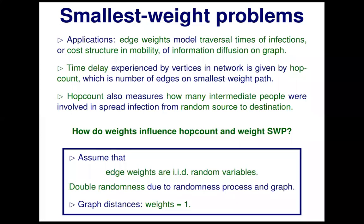Throughout this talk we'll assume that these edge weights are IID random variables, which means there is actually double randomness in this problem. We have randomness in the edge weights on one hand, and on the other hand we'll be modeling our networks through random graphs, so the graph itself is also random. We want to know what the interplay is between these two sources of randomness. Note that graph distances are a particular instance of the smallest weight problem where every edge has weight one.